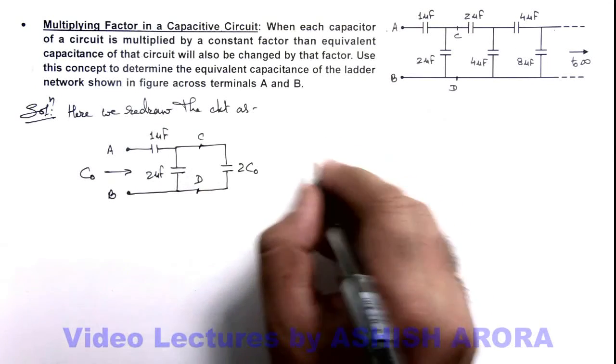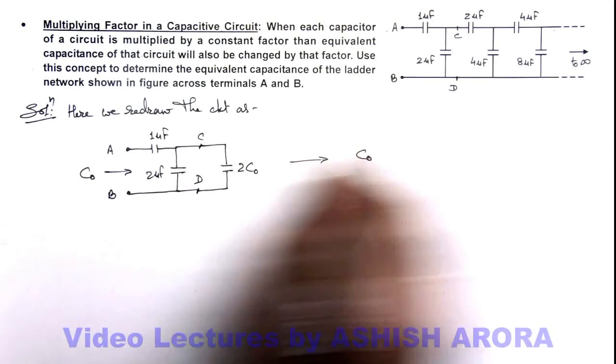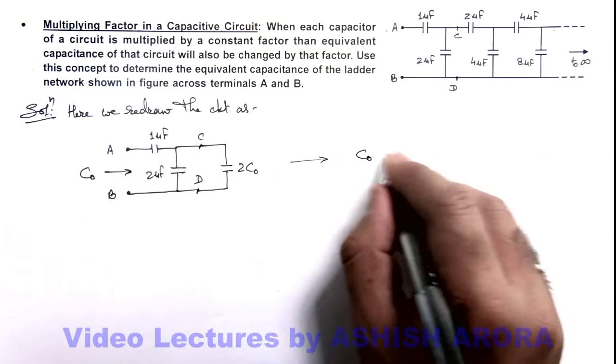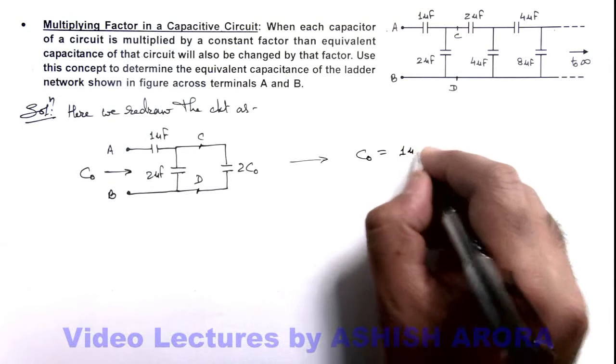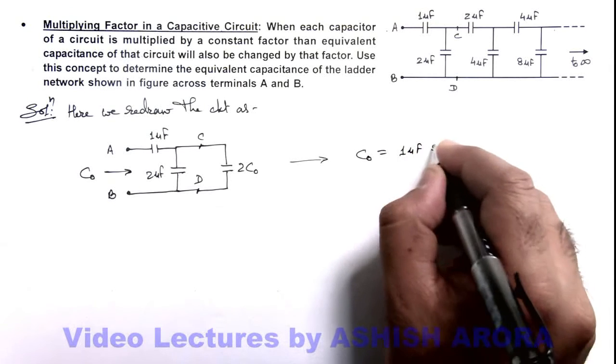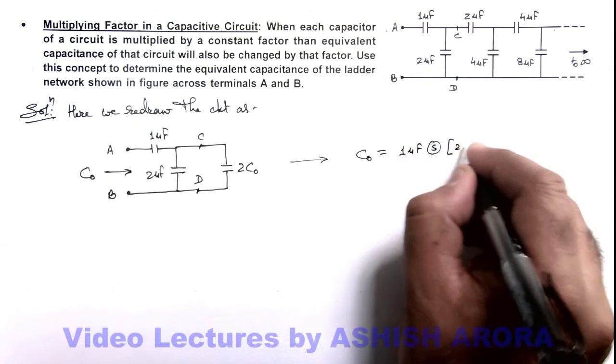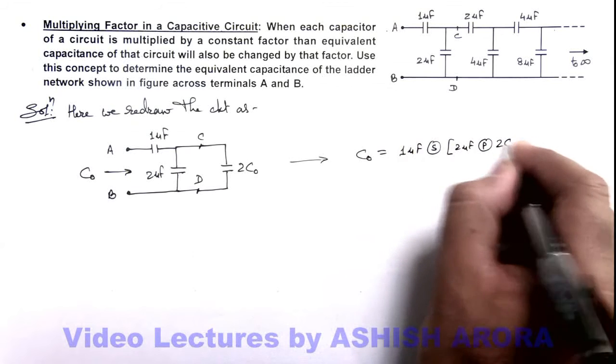So here, we can directly write this capacitance C_not equals this 1 microfarad in series combination with 2 microfarad in parallel combination with 2C_not.